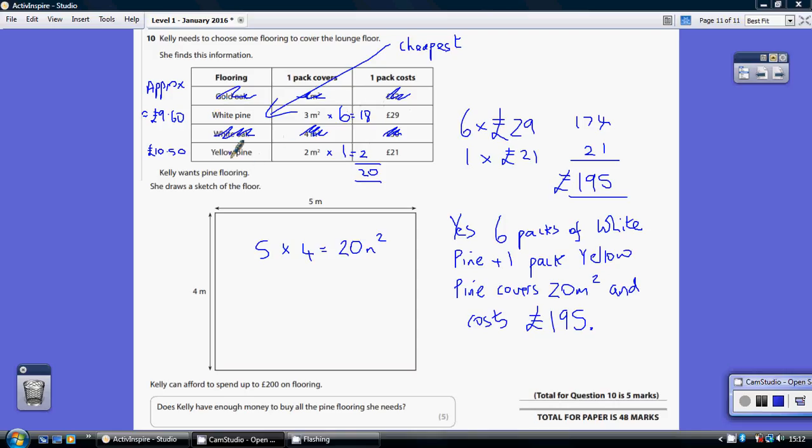So how much does this cost me? Well, I've already said that six packs of the £29 each is £174. One pack of this at £21 is £21. Add those together £195.